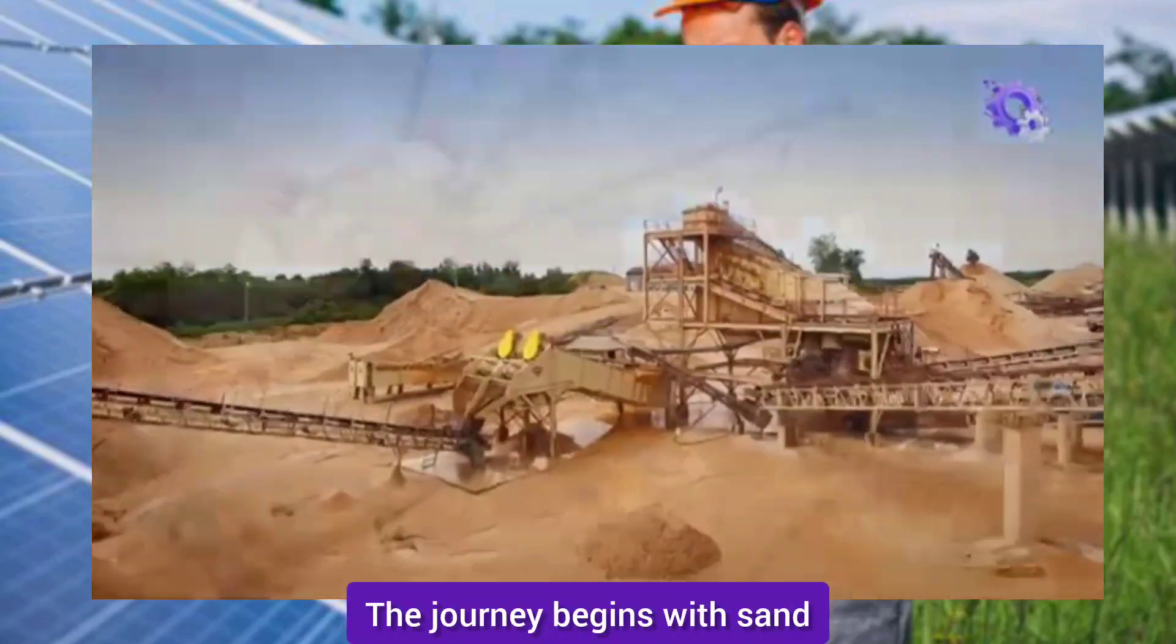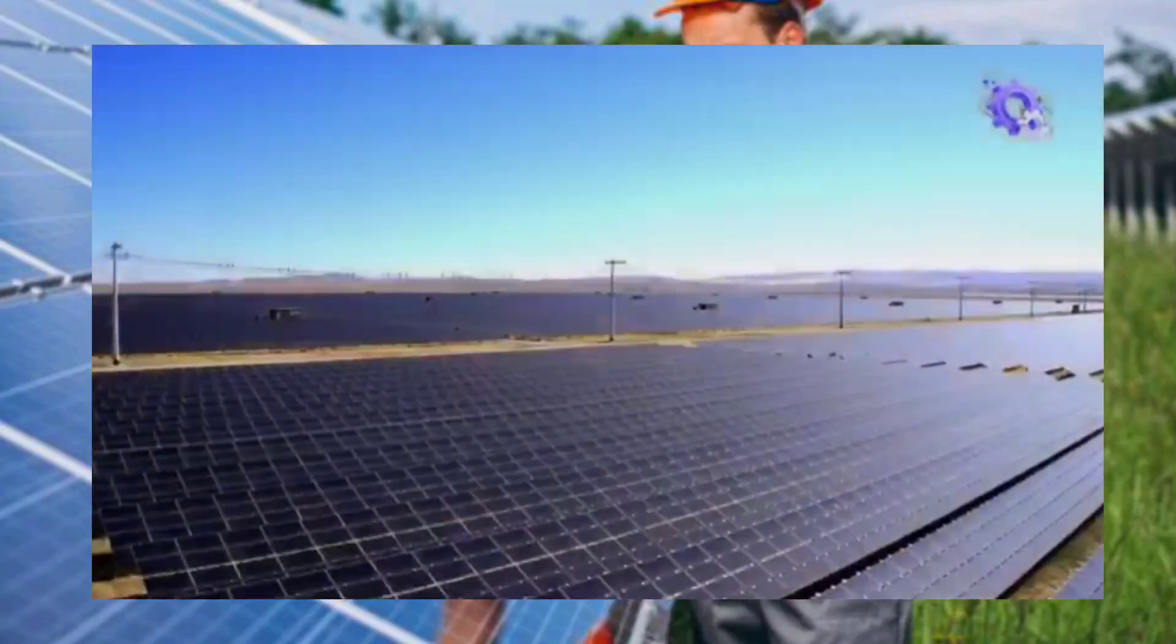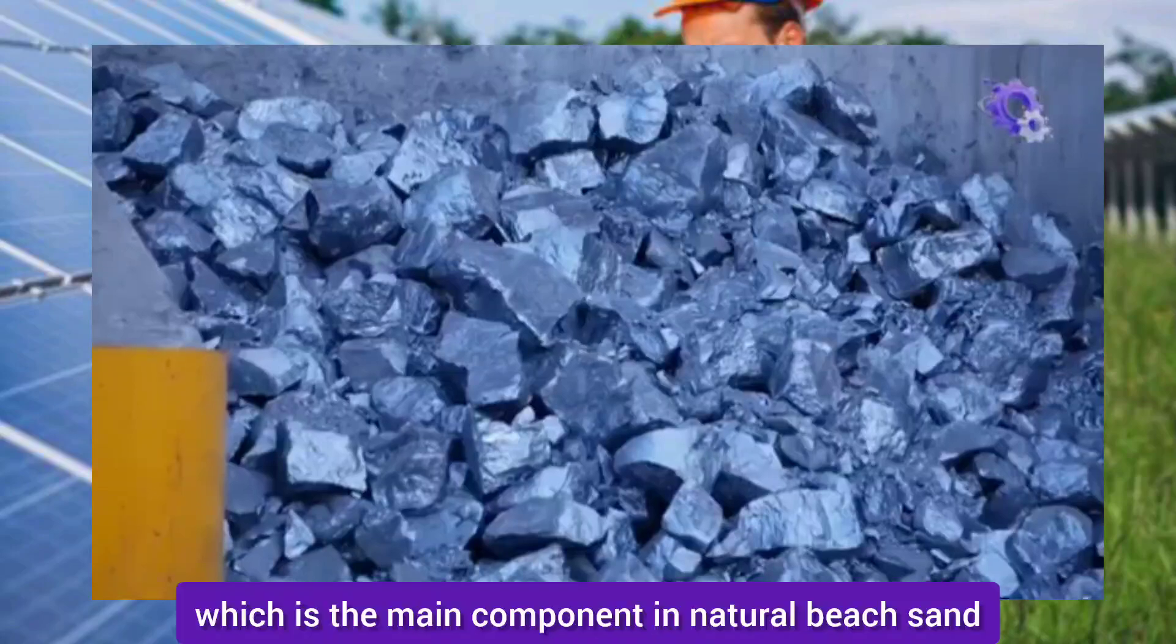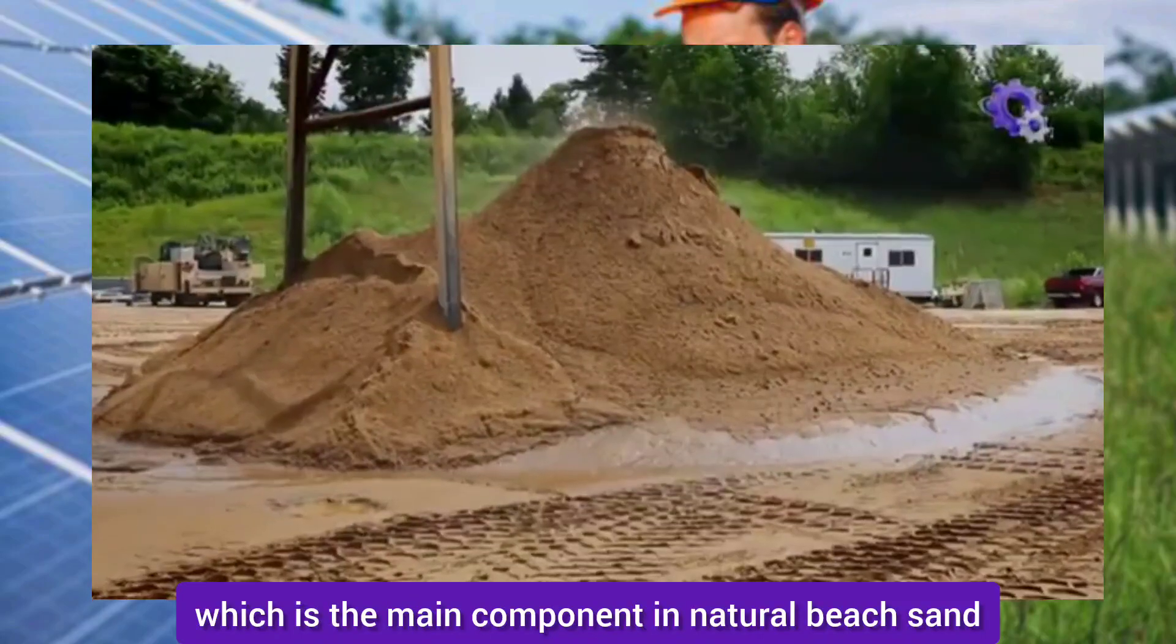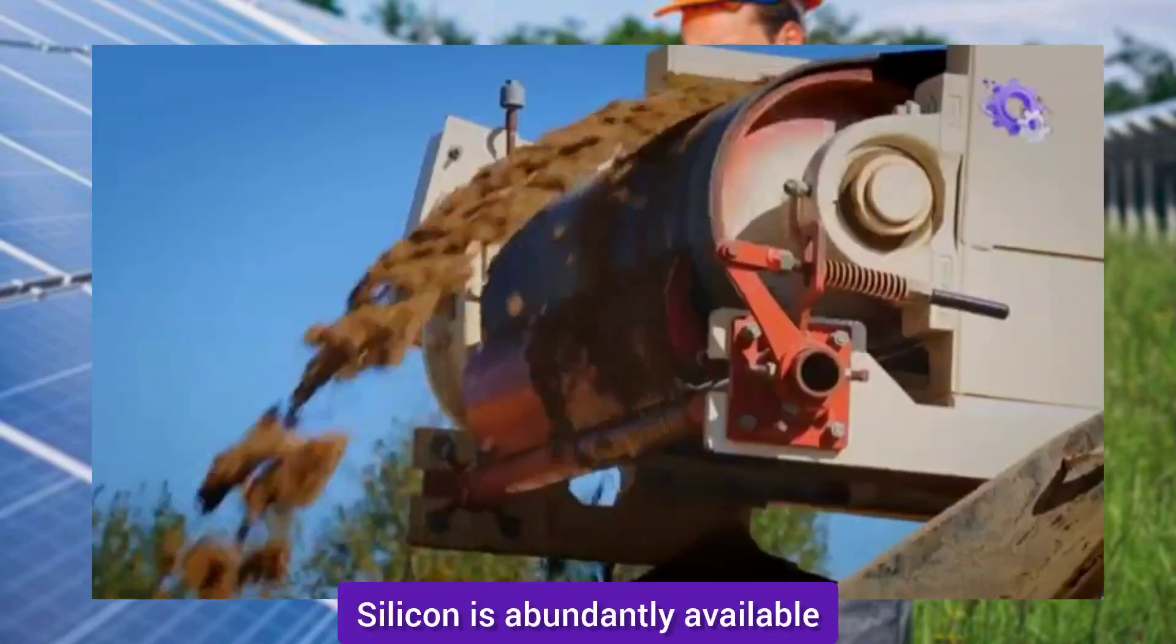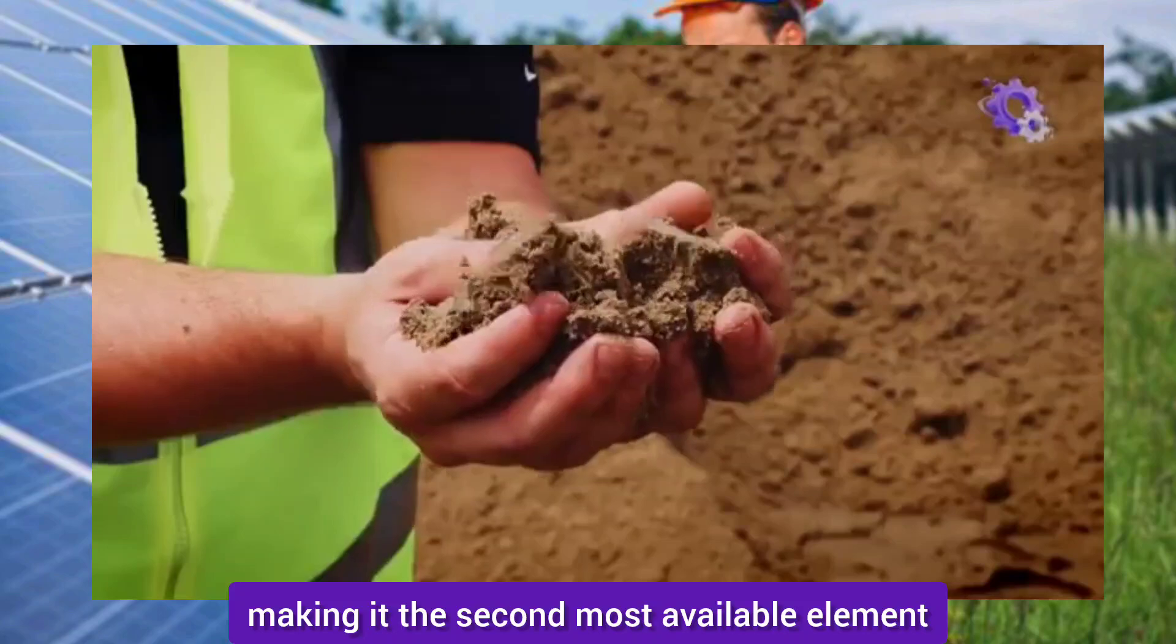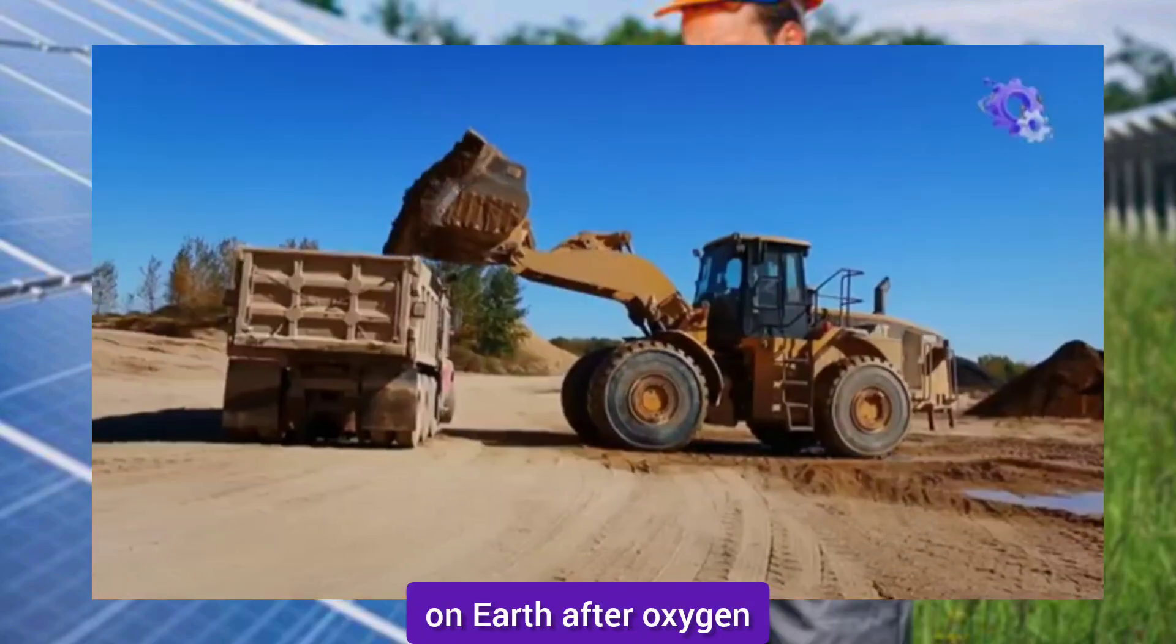The journey begins with sand, specifically quartz sand. Most solar panels are made of silicon, which is the main component in natural beach sand. Silicon is abundantly available, making it the second most available element on Earth after oxygen.